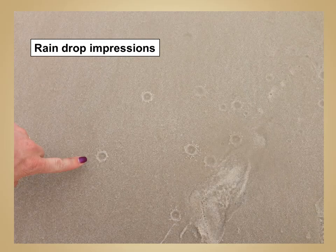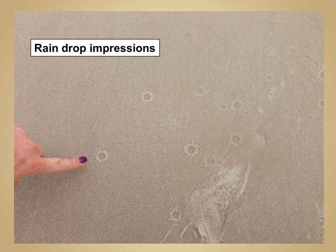A number of other sedimentary structures can form on the surface of bedding planes. For example, here you can see raindrop impressions, where raindrops have fallen on sand. If this were to be lithified, these raindrop impressions would be recorded in the rock record. Other examples include sticks or small rocks being tumbled or dragged across the surface of a bed, creating small grooves or scratches — sometimes called tool marks — which can be preserved as well.